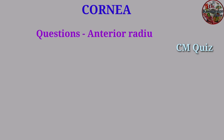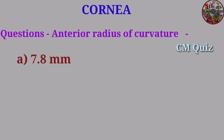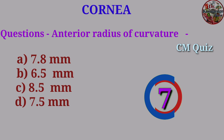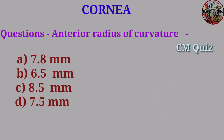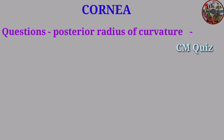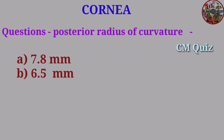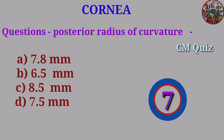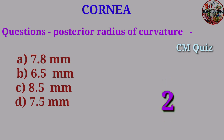Question: Anterior radius of curvature — A. 7.8 mm, B. 6.5 mm, C. 8.5 mm, D. 7.5 mm. Answer: 7.8 mm. Question: Posterior radius of curvature — A. 7.8 mm, B. 6.5 mm, C. 8.5 mm, D. 7.5 mm. Answer: 6.5 mm.